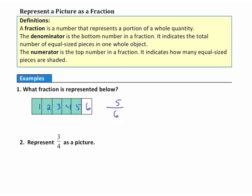Example 2: Represent three-fourths as a picture. I need to start with a picture — since I'm dividing into fourths, I'll draw a square and divide it into four equal-sized pieces. That takes care of the denominator of four. Now the numerator tells me to shade three of these pieces: one, two, three. That picture represents the fraction three-fourths.